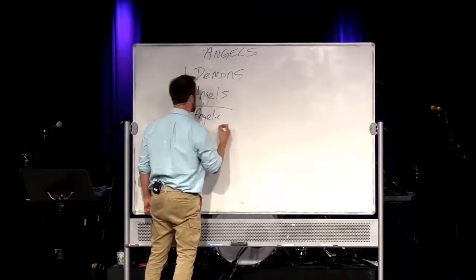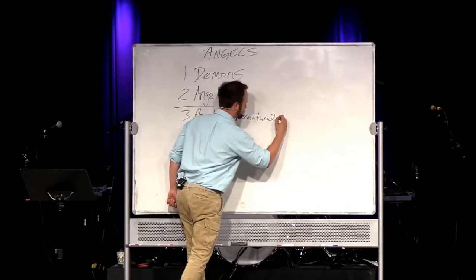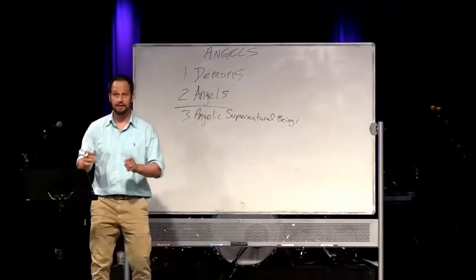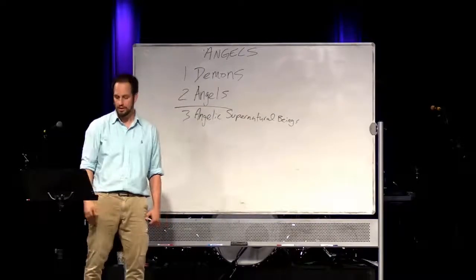Let's do some good math. Supernatural beings. Now, here's why this is important. For every demon, sometimes we have a lot of people who are freaked out and afraid of demons. Just know that for every demon, there are two angels.